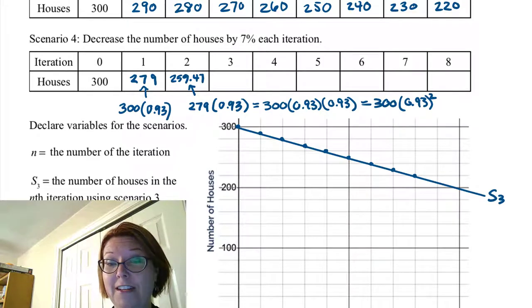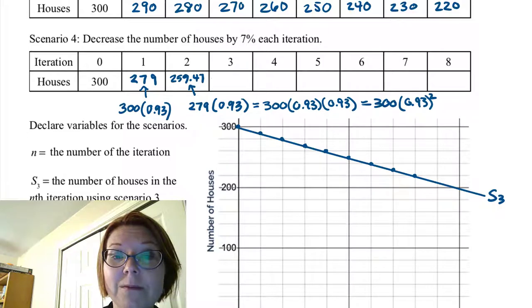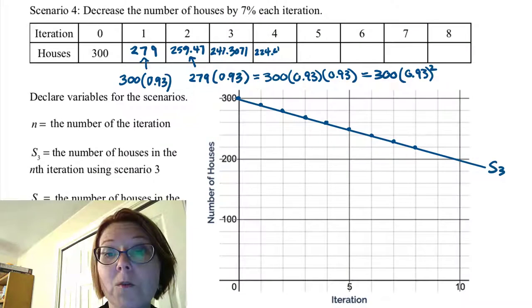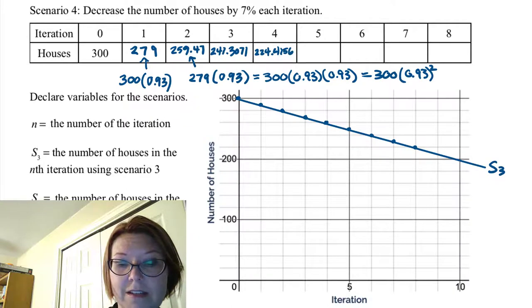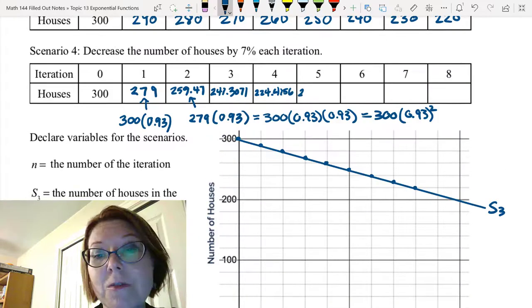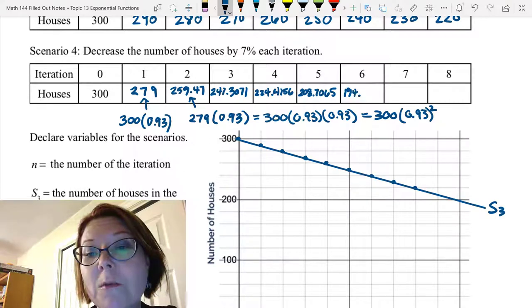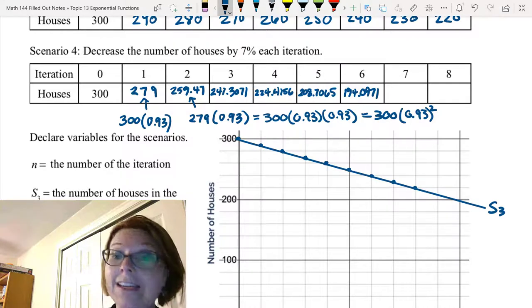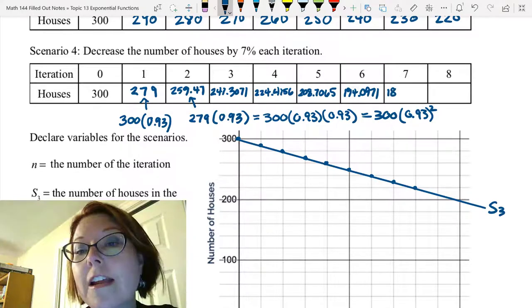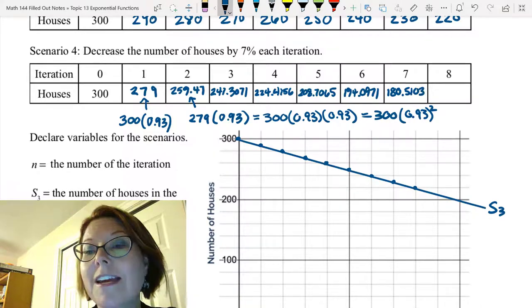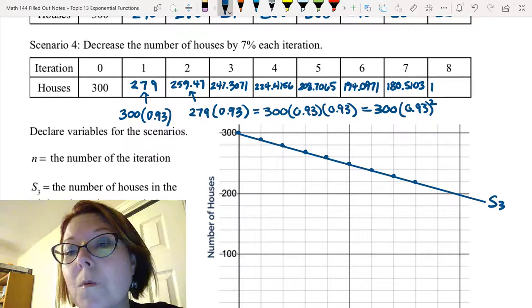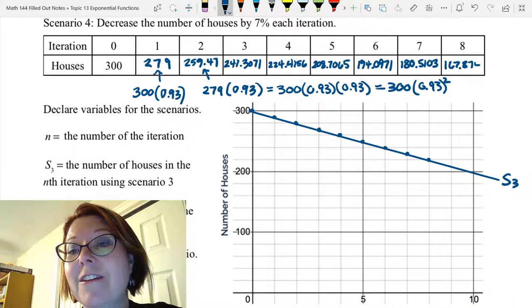Let's go ahead and fill in the rest of the table that way. Iteration 3 is 241.3071. Iteration 4 is 224.4156. Iteration 5 is 208.7065. Iteration 6 is 194.0971. Iteration 7 is 180.5103. And iteration 8 is 167.8745.